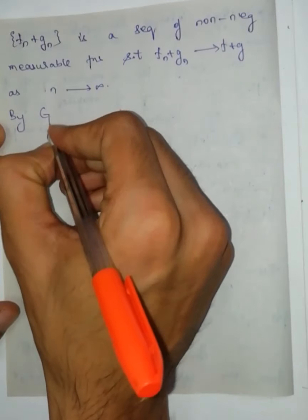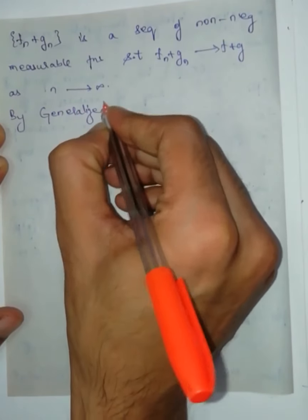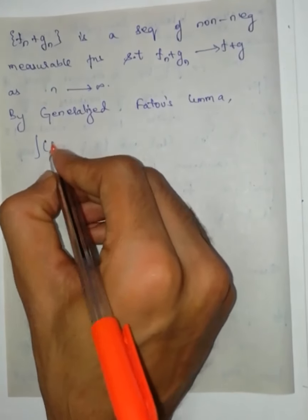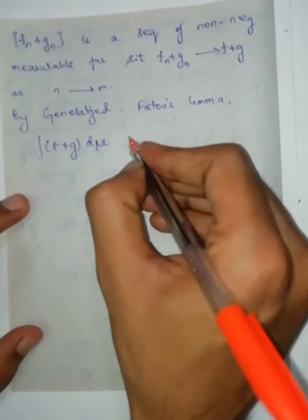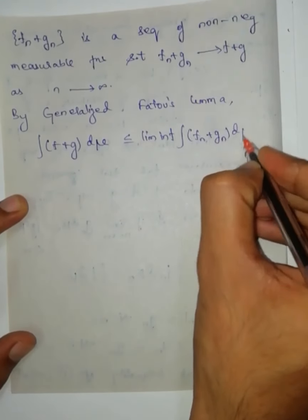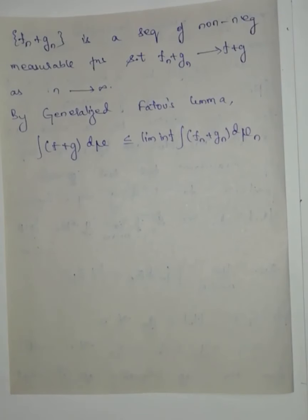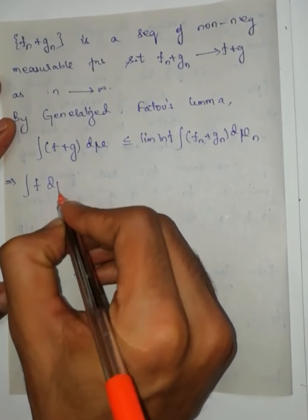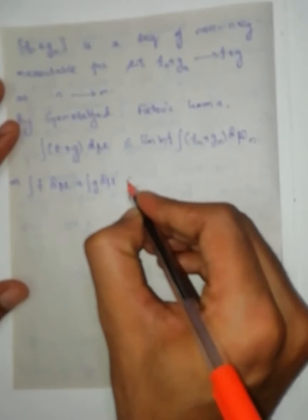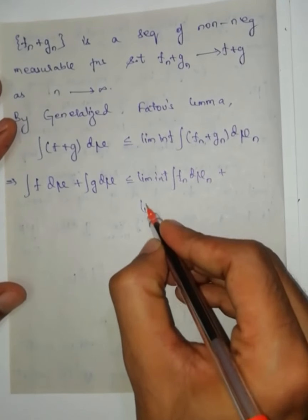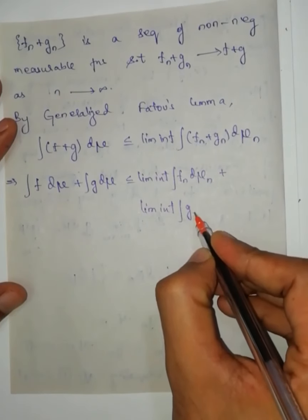Therefore, by the Generalized Fatou's Lemma — which we proved in the previous lecture — we have: ∫(f + g) dμ ≤ lim inf ∫(f_n + g_n) dμ_n. Since μ_n is a sequence of measures on B, this can be written as: ∫f dμ + ∫g dμ ≤ lim inf ∫f_n dμ_n + lim inf ∫g_n dμ_n.